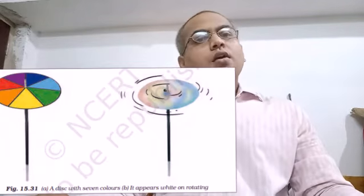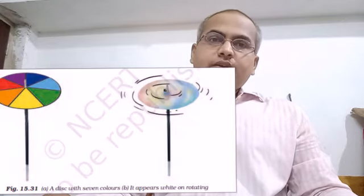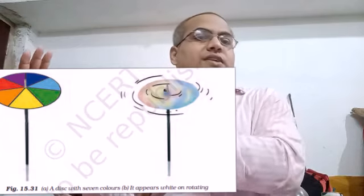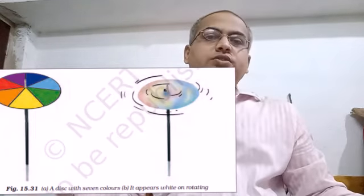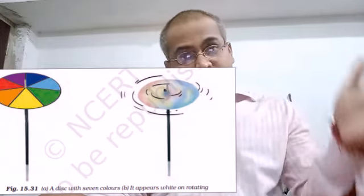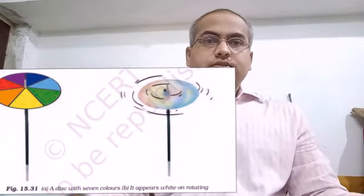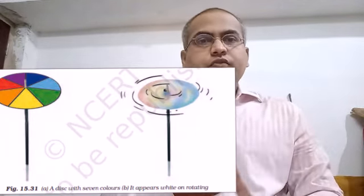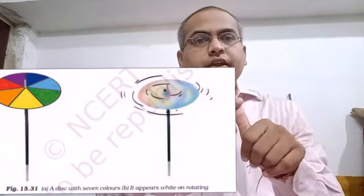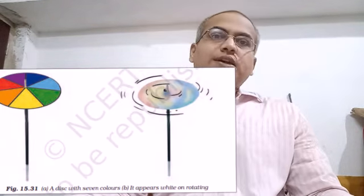We take a prism into a dark room. From a small hole, allow the light to pass through the prism and obtain the ray of light coming out from the other surface of the prism on a white surface or white wall. You will observe that there are seven colors in the sunlight: V for Violet, I for Indigo, B for Blue, G for Green, Y for Yellow, O for Orange, R for Red. This VIBGYOR color will be observed from the spectrum of sunlight.